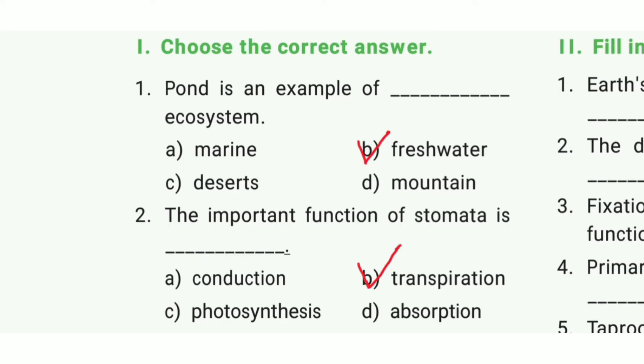First question: Pond is an example of which ecosystem? The answer is option B, fresh water ecosystem.